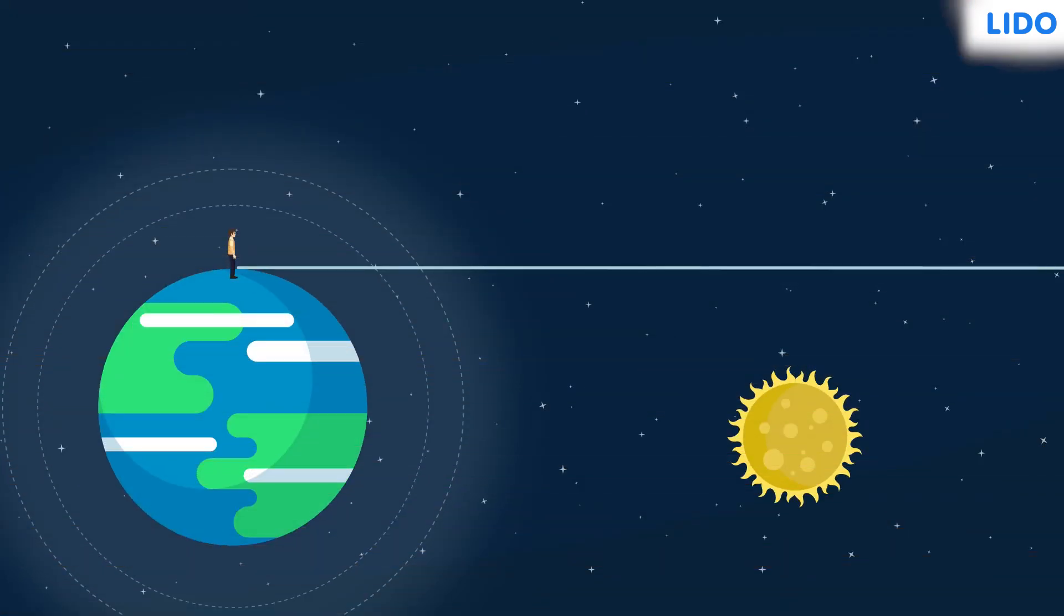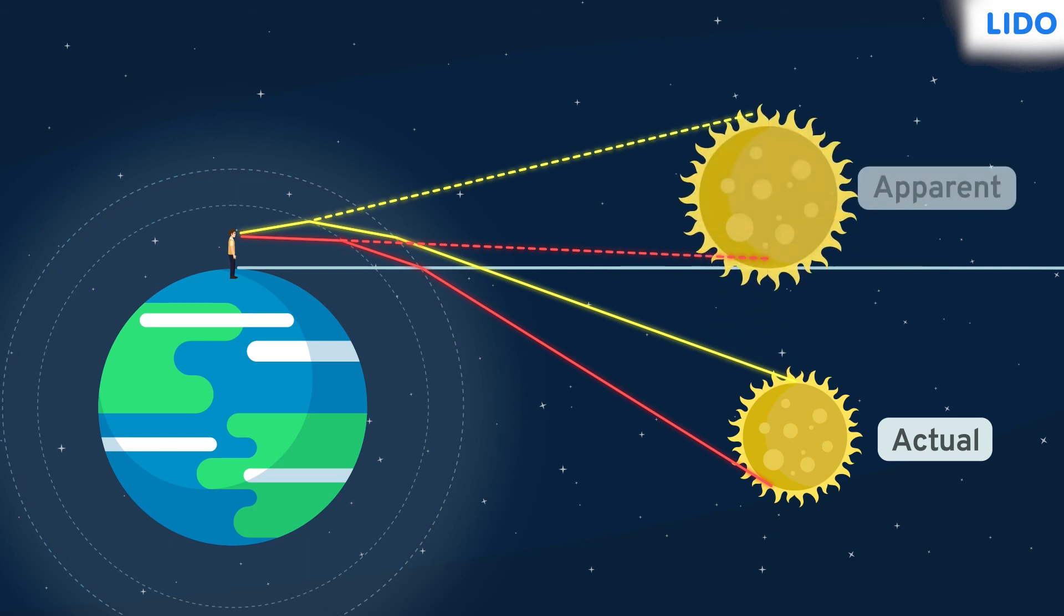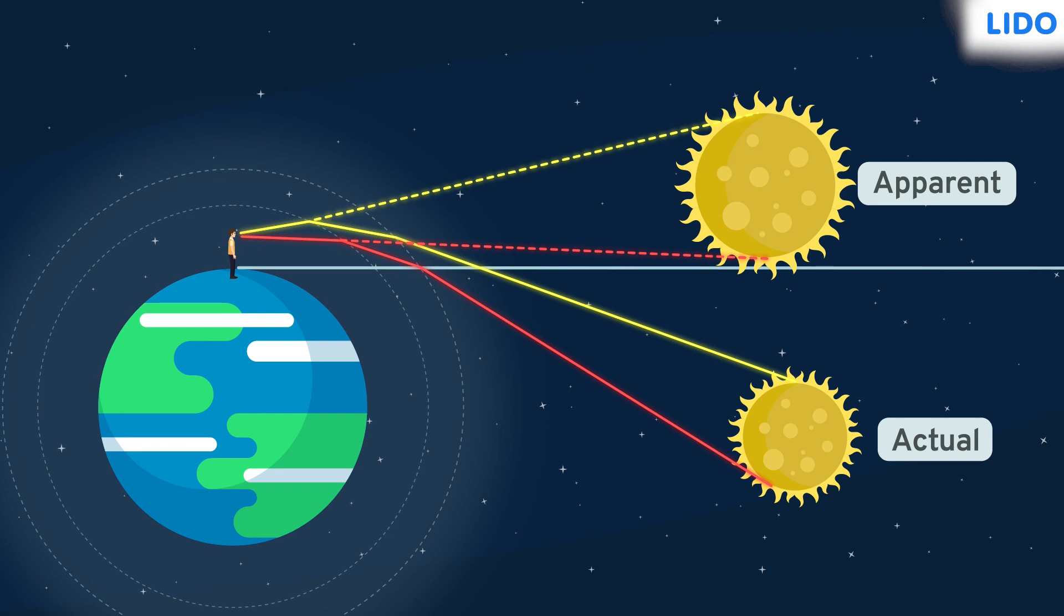Refraction or bending of light also causes the sun to appear squashed during the sunrise and sunset. Let us take the scenario where the sun is setting. The rays of light from the top of the sun bend at the atmosphere vacuum boundary. The rays of light from the bottom part of the sun bend but they bend a little more than compared to those from the top. Thus, the shift in the part at the bottom of the sun is more than compared to the top part which causes it to appear squashed.